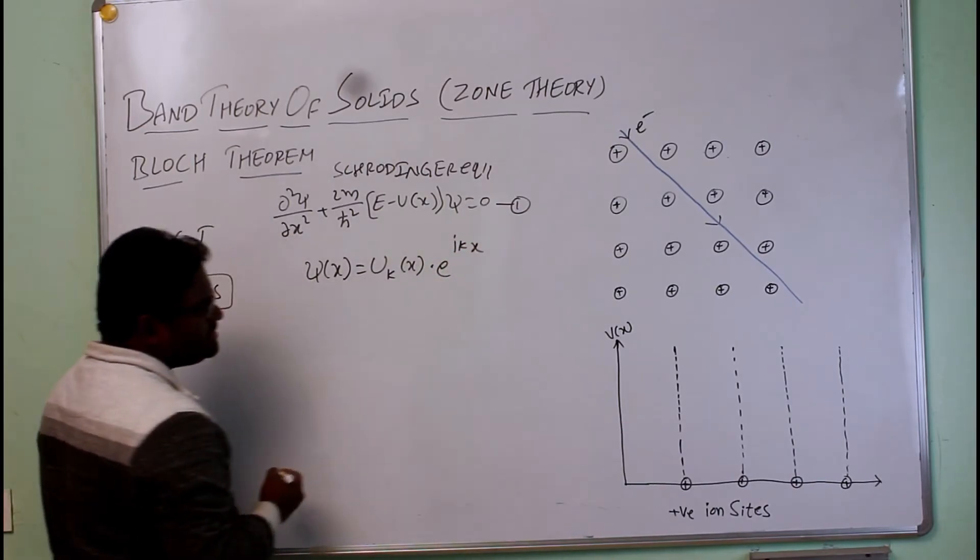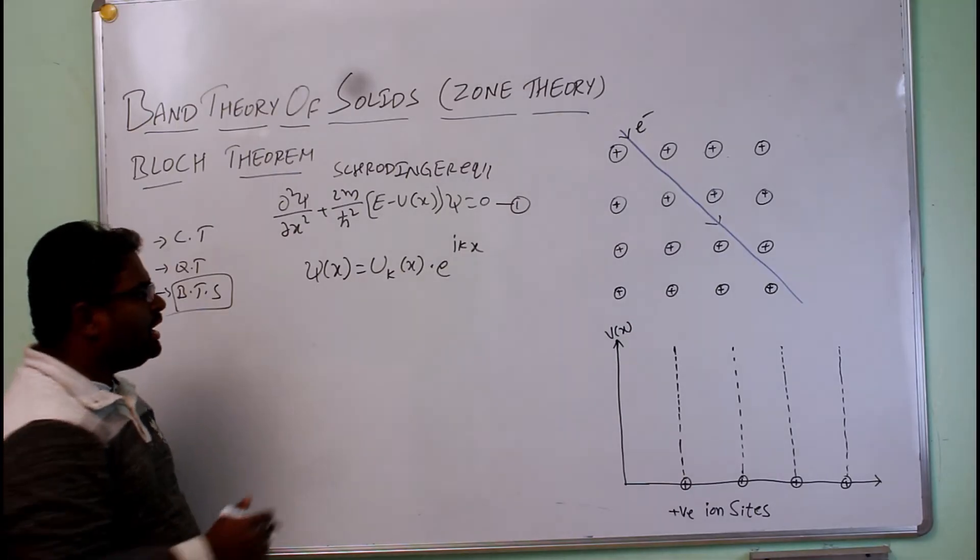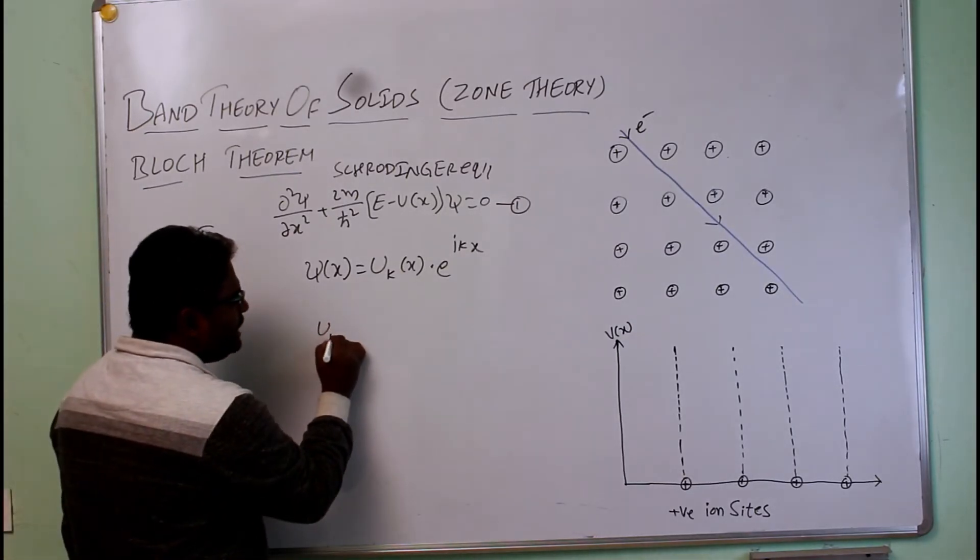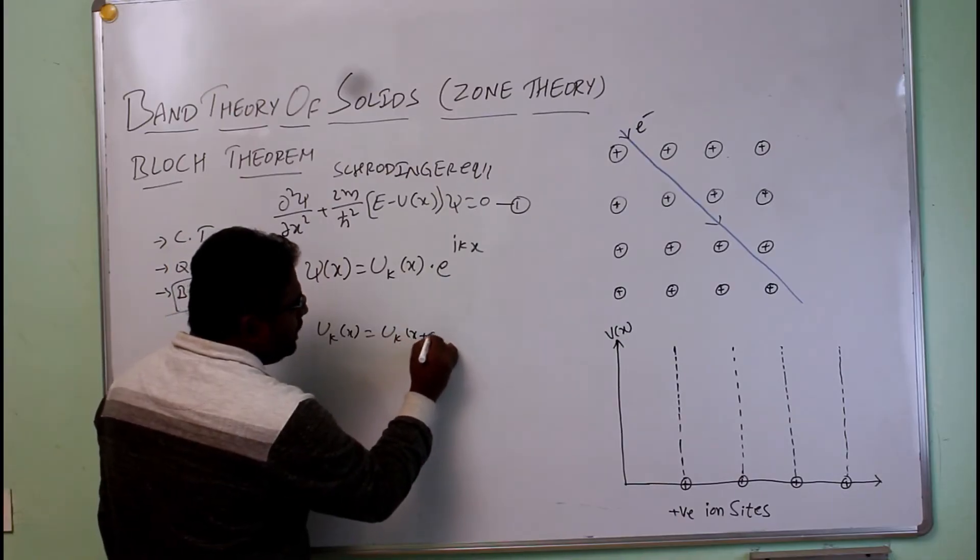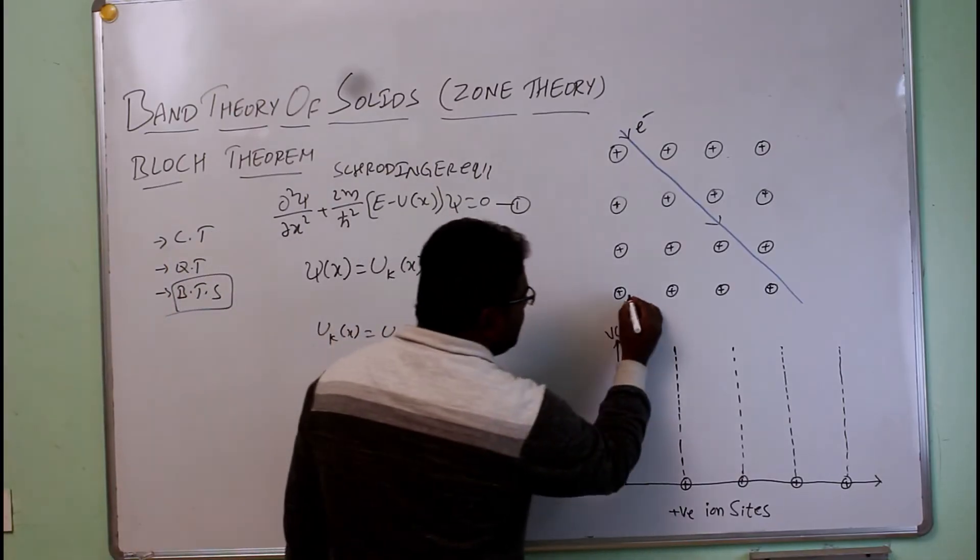Where e^(ikx) is a periodic wave function and U_k(x) is periodicity. So every time it is enhanced by U_k(x+a), where a is the inter-atomic distance.